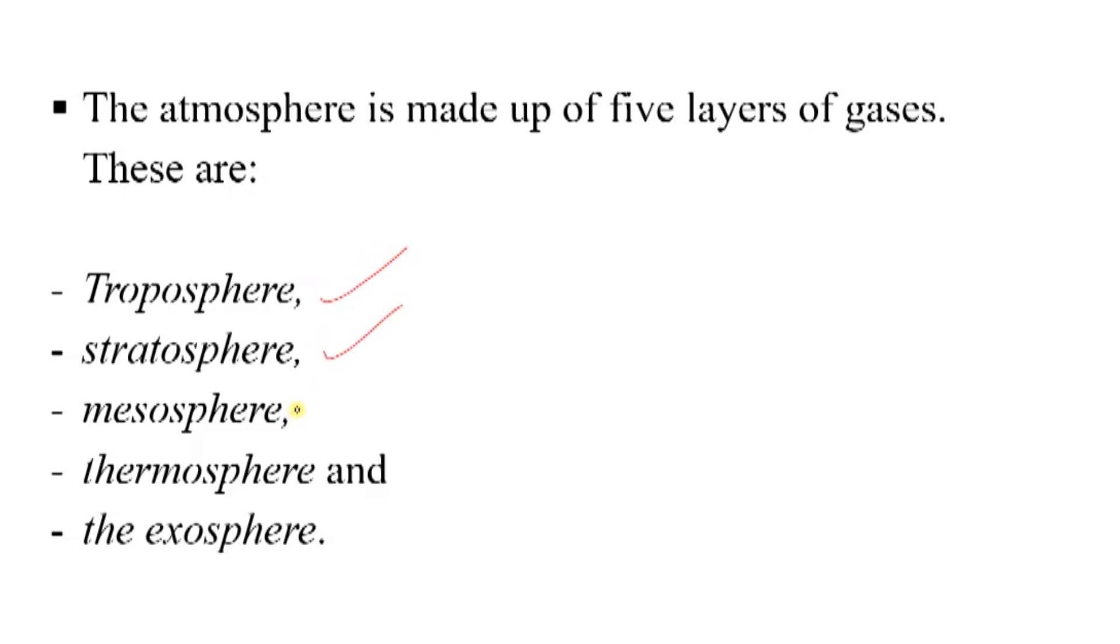the stratosphere, the mesosphere, the thermosphere and the exosphere. So these are the five layers of the atmosphere that is around us.